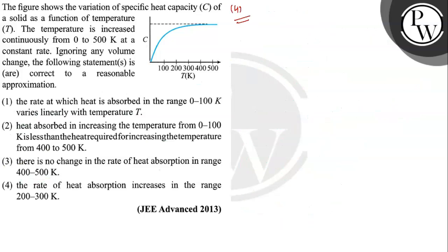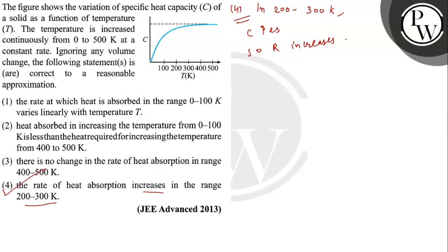Option 4: in the range 200 to 300 Kelvin, C increases. So R also increases. So the rate of heat absorption increases in that range. This option is also correct.